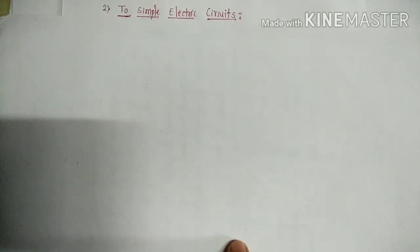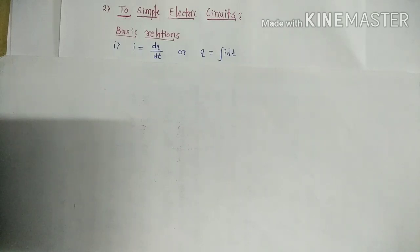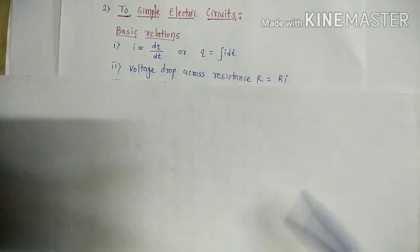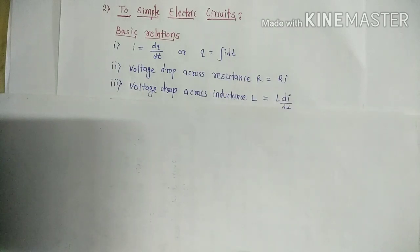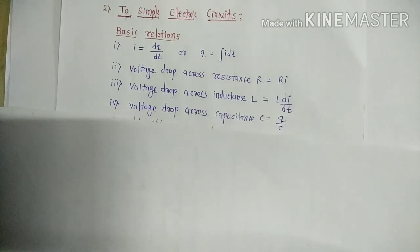We need some basic relations. First, the relation between current I and charge Q: I is equal to dQ/dt, or equivalently, Q is equal to the integration of I dt. Second, the voltage across resistance R is Ri. Third, the voltage across inductance L is L di/dt. Similarly, the voltage across capacitance C is given by Q/C.